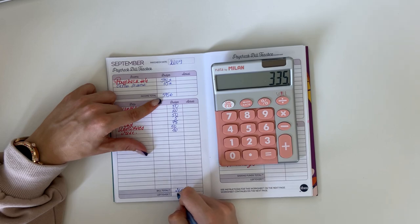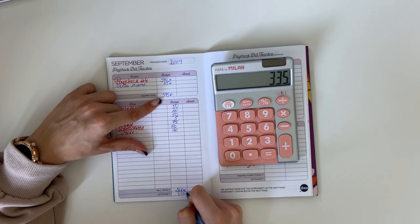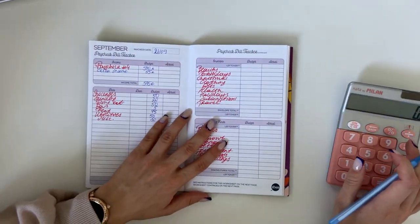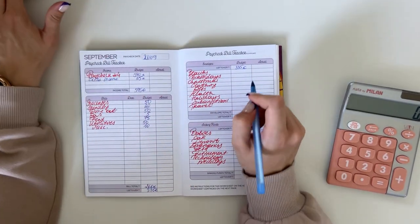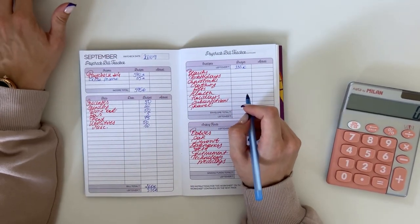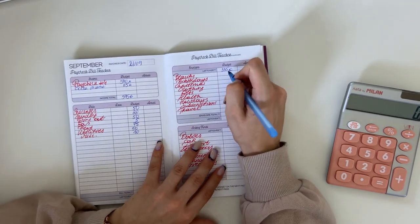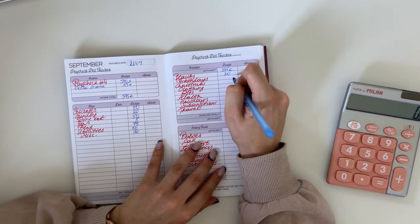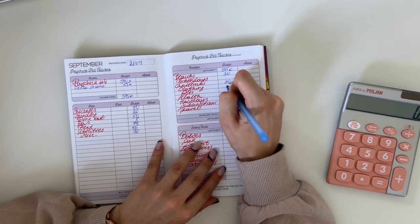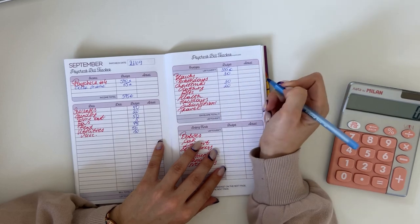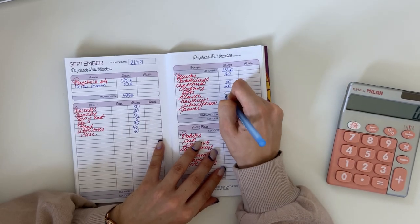335 perfect. Next, short-term sinking funds. 30 is going into beauty. Birthday is fully funded for the year so 30 is going into Christmas, 20 into clothing, we're gonna put 30 into health.